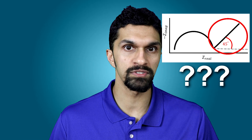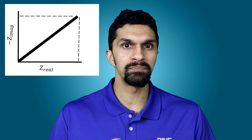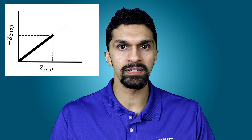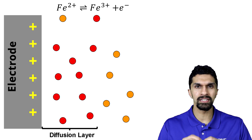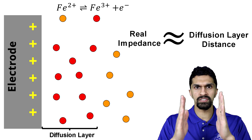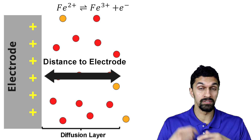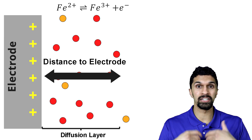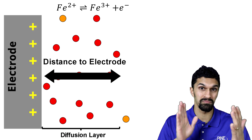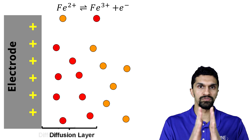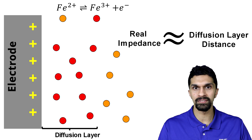But how do we understand the 45-degree angle in the Nyquist plot? Why is it that the impedance increases on a 45-degree angle? Well, 45 degrees is a very special angle — it means that the real and the imaginary impedance are increasing at the same rate. The real impedance we can think of as the distance of the diffusion layer. As the diffusion layer thickness increases, the iron 2+ has a longer distance to travel before it can pass along a charge. It's harder to conduct something when there's a longer distance for a charge to move through, so as the diffusion layer thickness increases, we can think of that as the real impedance increasing.